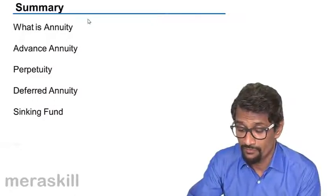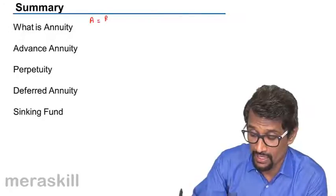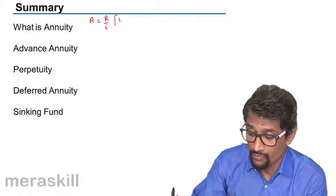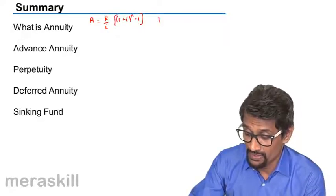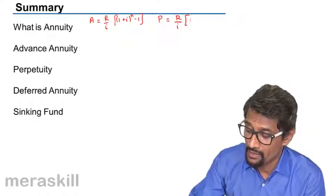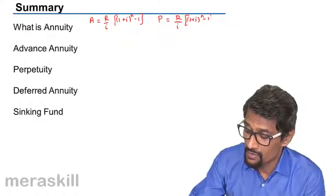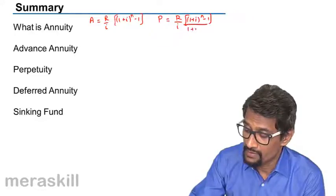Yes, so future value formula, just for brushing up: future value formula A is equal to R upon I into (1 plus I) raised to N minus 1. And the present value is going to be R upon I (1 plus I) raised to N minus 1 divided by (1 plus I) raised to N.